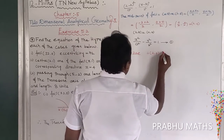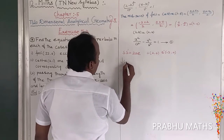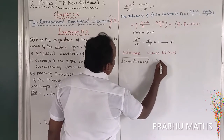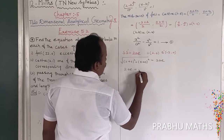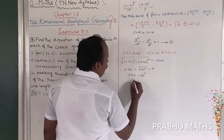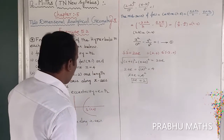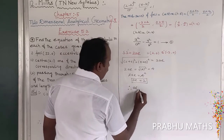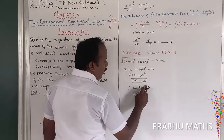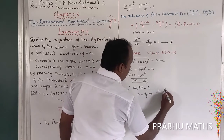The distance between S(2, 0) and S'(−2, 0) is √[(2+2)² + (0+0)²] = √[4²] = 4. So 2ae = 4, which gives ae = 2. Since e = 3/2, we have a × (3/2) = 2. Cross-multiplying: a = 4/3.